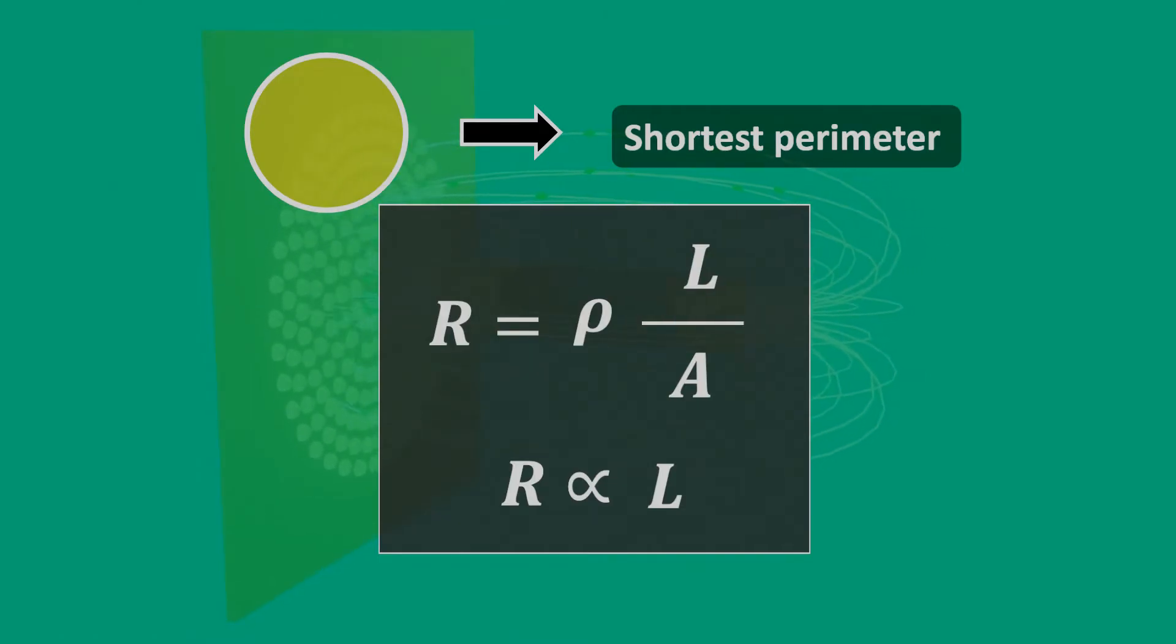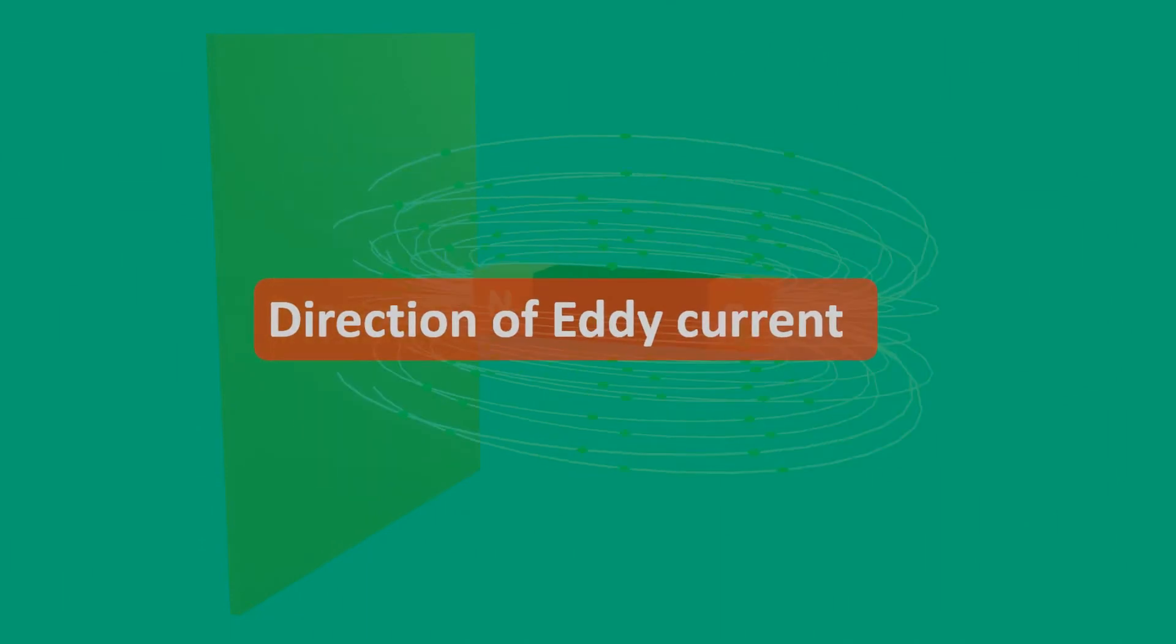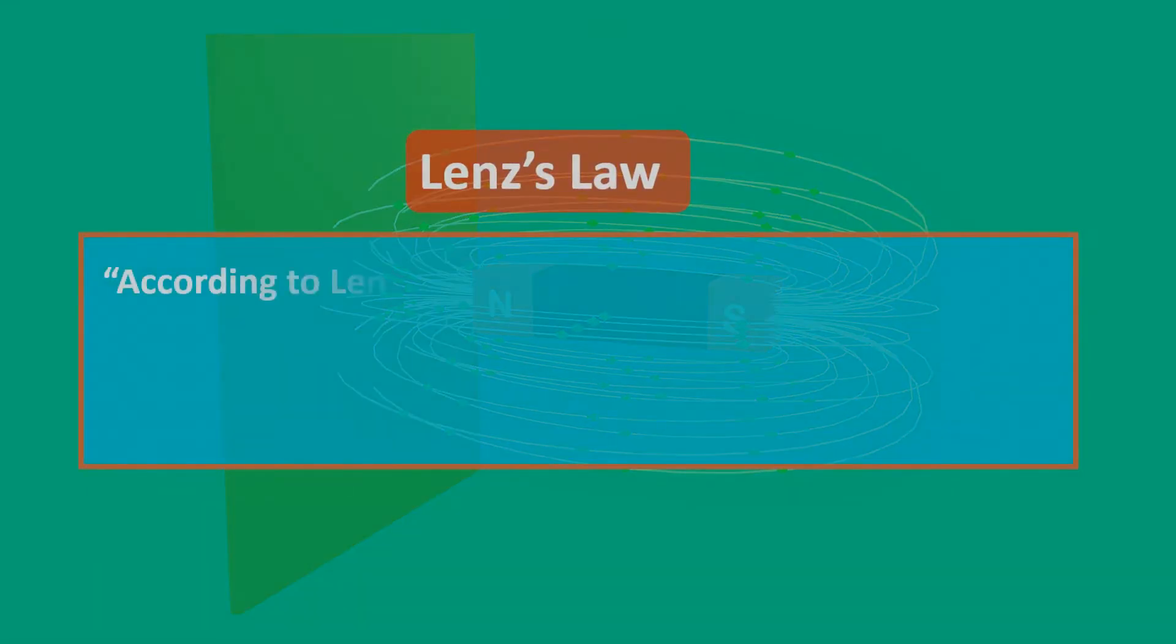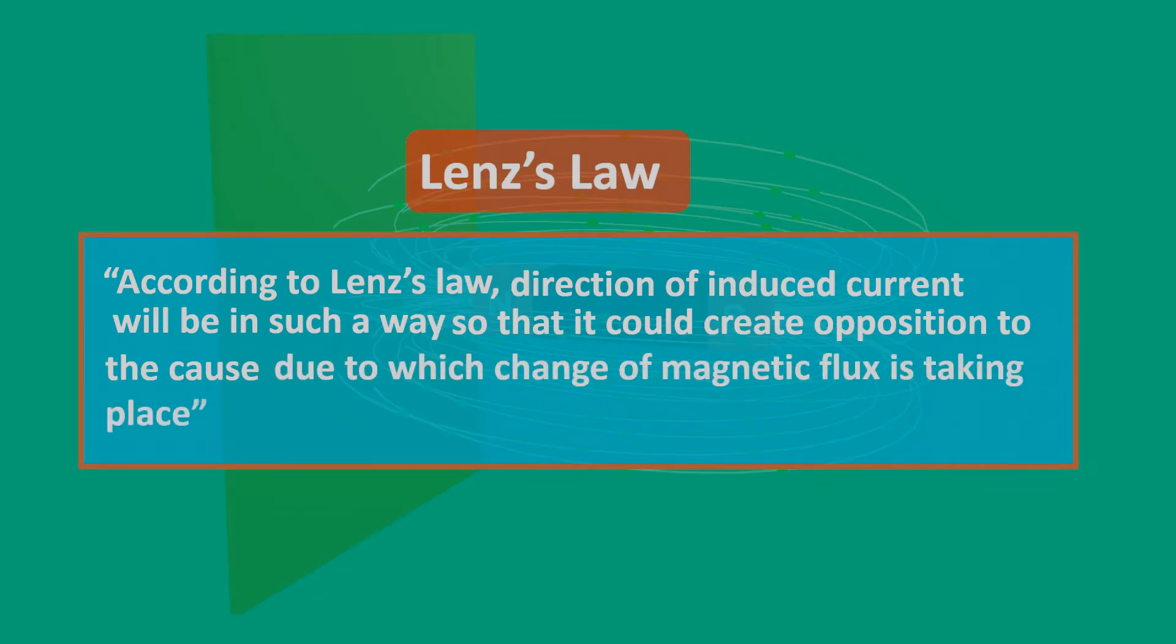Now, let's talk about the direction of eddy current. Direction of eddy current induced will be according to Lenz's law. According to Lenz's law, direction of induced current will be in such a way so that it could create opposition to the cause due to which change of magnetic flux is taking place.